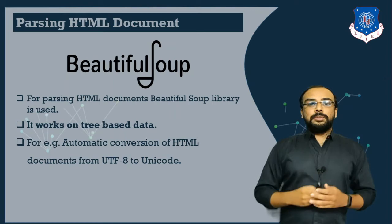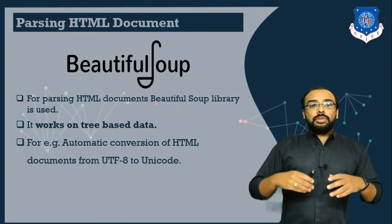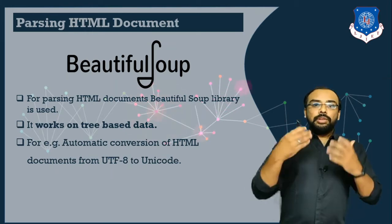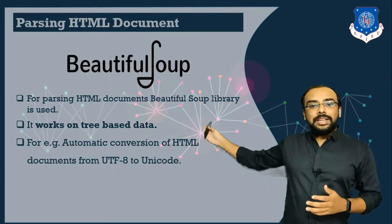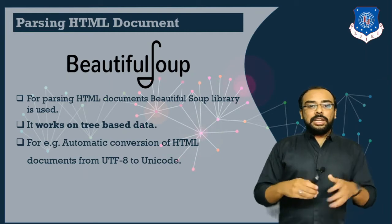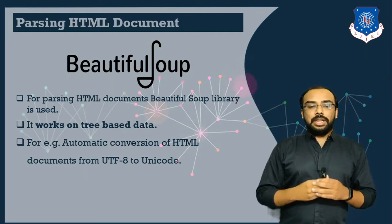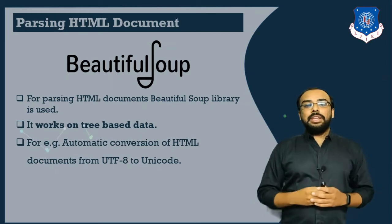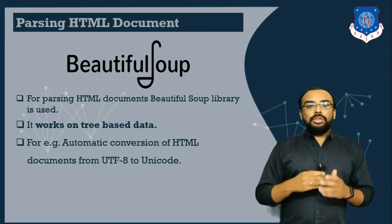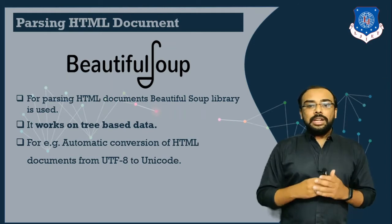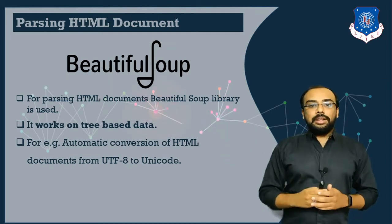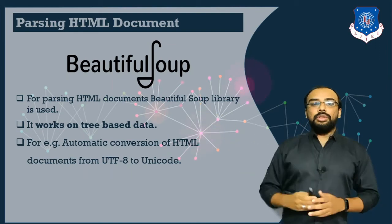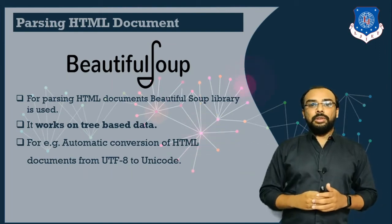This library works in a similar fashion to the tree data structure — it works on tree-based data. For example, if you have an HTML page and want to convert UTF format into Unicode characters directly or automatically, at that particular time we use the BeautifulSoup library.